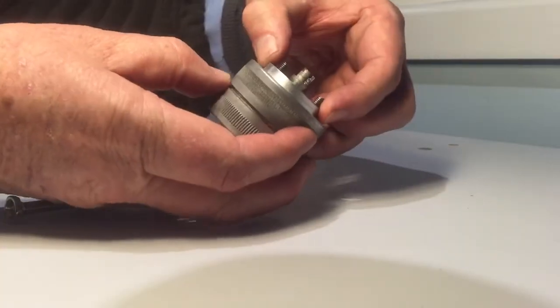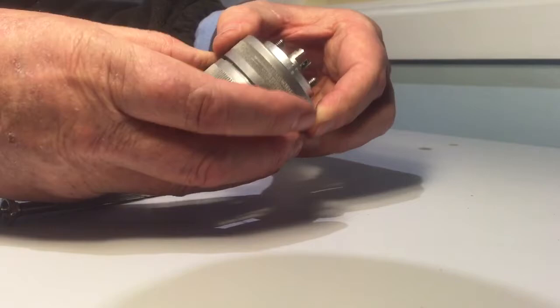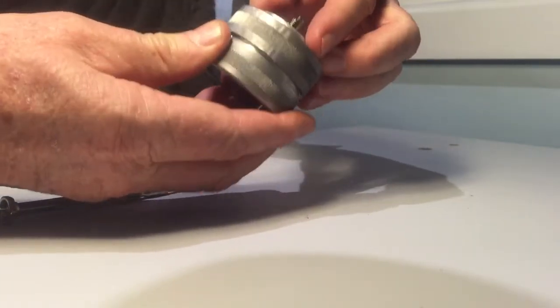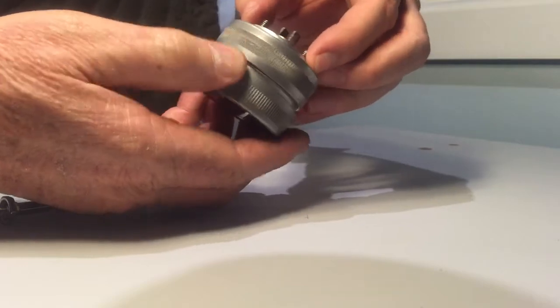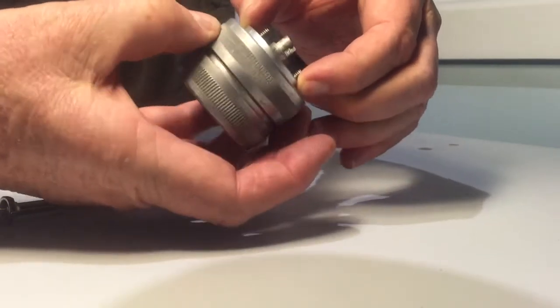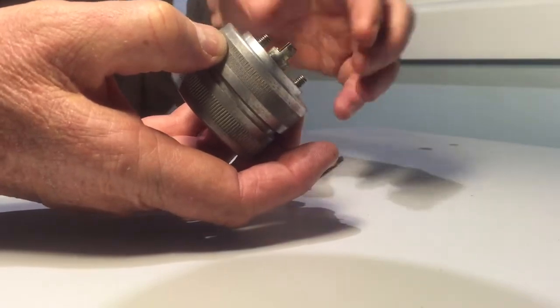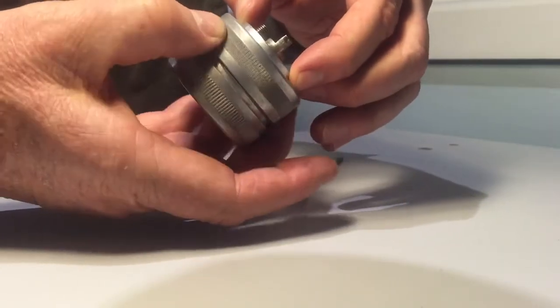But the knob can rotate around that. In fact I've got this done up too tight, so I can loosen that. So the trim knob actually rotates. This piece here is fixed to the control arm and the knob can rotate on it.